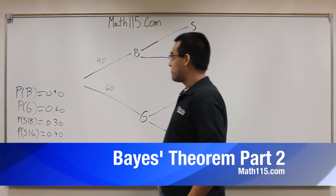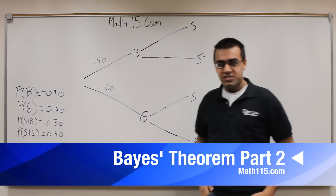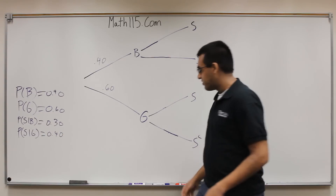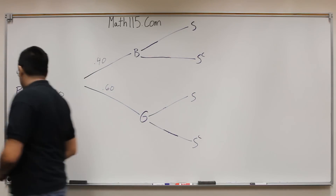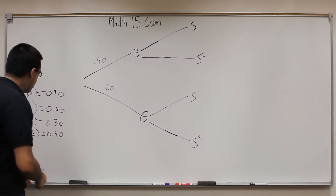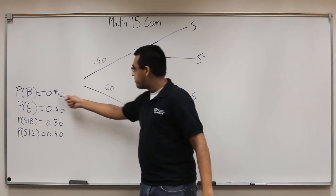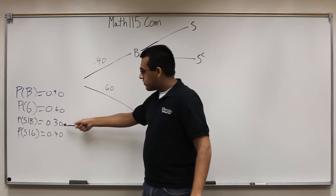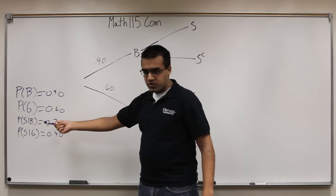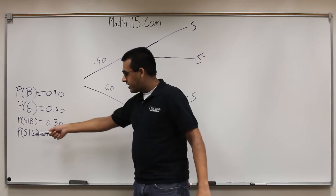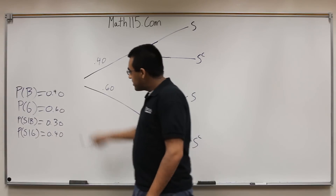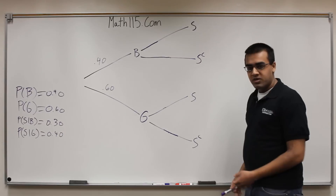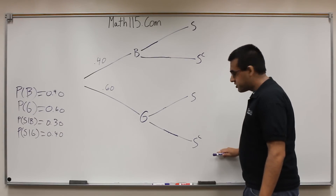Hi, my name is Ashish Rastogi from Math115.com, and I'm going to give an actual example based off of what Matt Guthrie had done in the previous video. So now what we're going to do is actually try and add some numbers. Over here I have a few numbers: the probability of boys being 40%, probability of girls being 60%, S given B being 30% — where S stands for soccer — and S given G being 40%. Using these numbers, I'm going to explain how we can fill in this tree diagram and get the end result numbers.